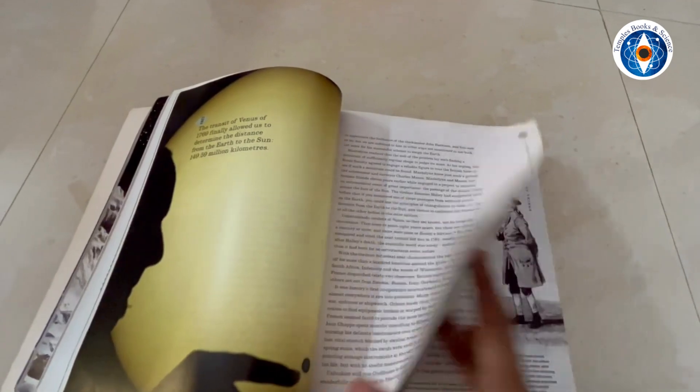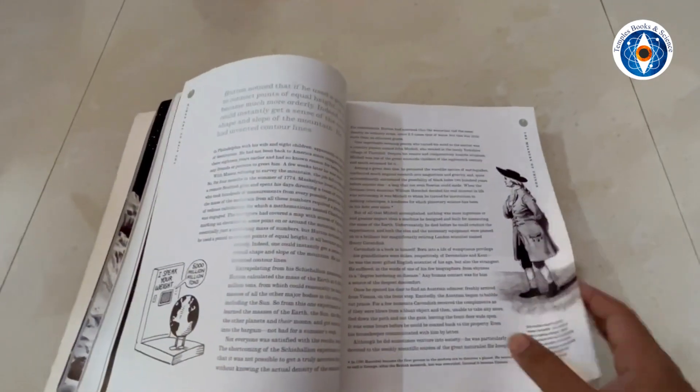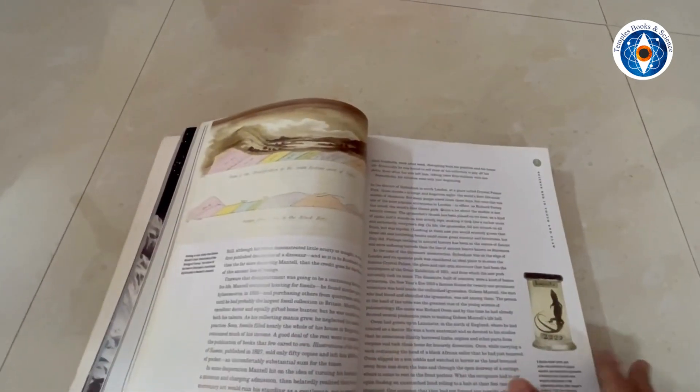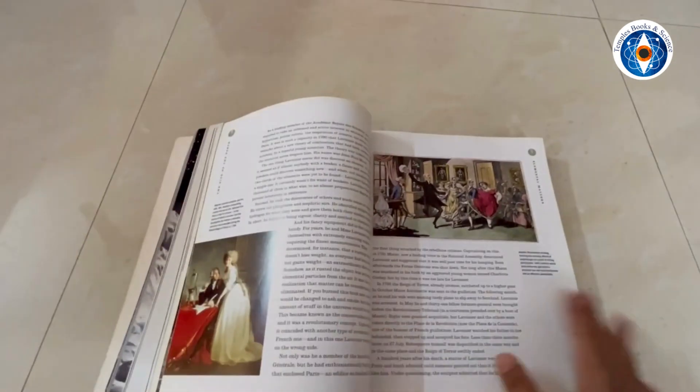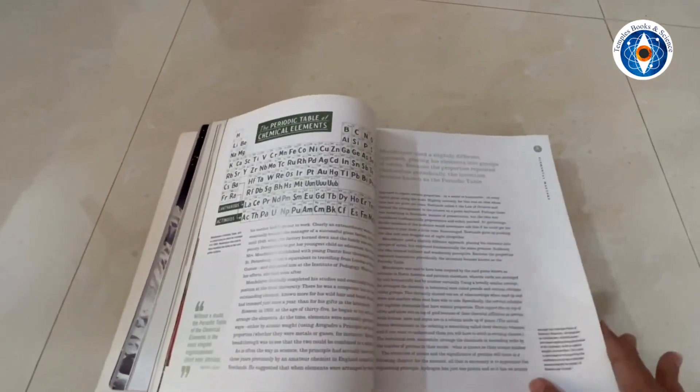I loved it so much that after reading the paperback edition, I went and bought this large illustrated version. From its very first words, it puts the sheer improbability of our existence into perspective. This is how it begins.